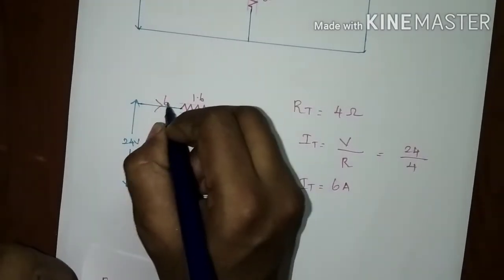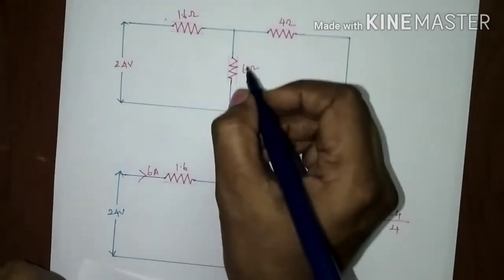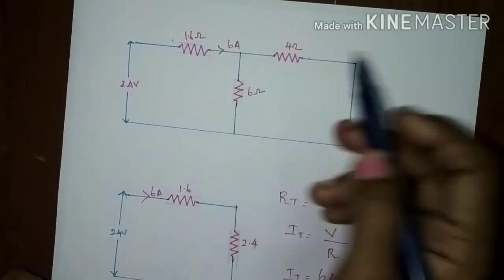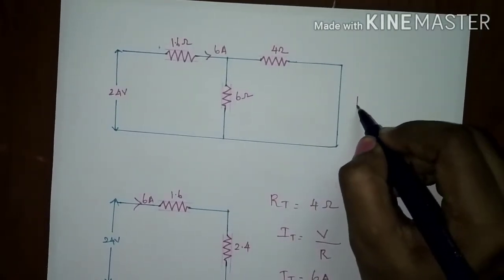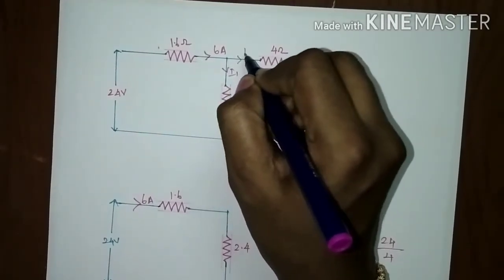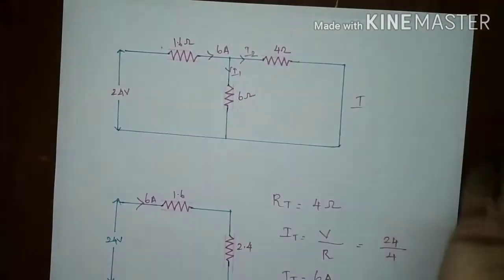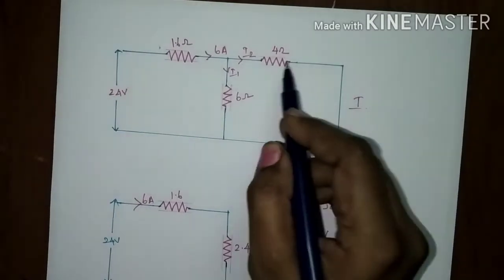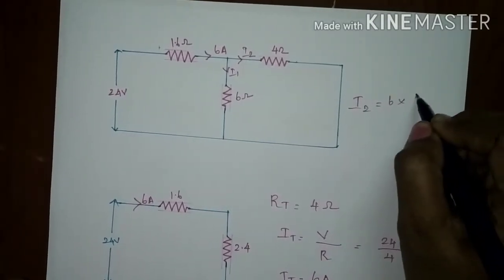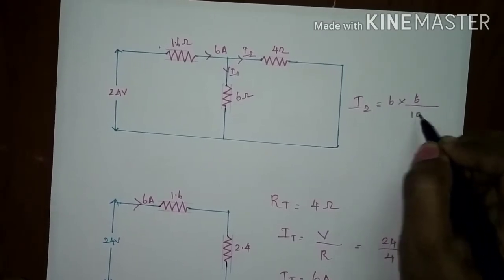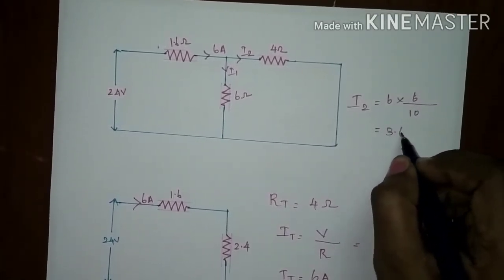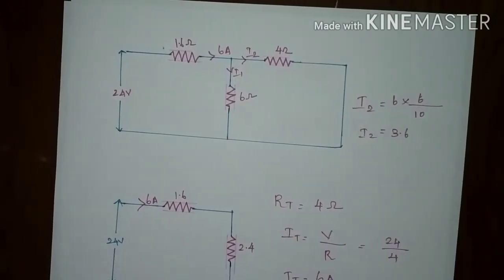6 ampere current will be flowing here and it will be divided into 2. Now apply the current division rule. Assume this as I1 and this as I2. We have to find the current flowing through this 4 ohms resistor. I2 is equal to total current into opposite resistance divided by total resistance 10, which gives a value of 3.6. So the value of I2 is 3.6 amperes.